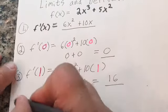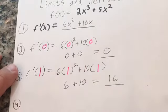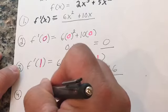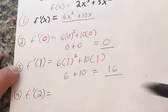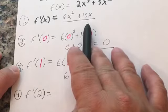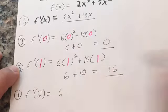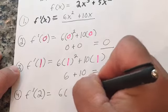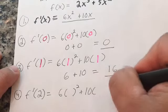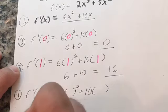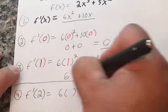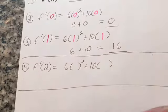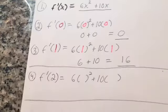Number four I'm going to let you do on your own. Find the derivative at x equals two of 6x squared plus 10x. I'm going to ask you that question through Google Classroom.